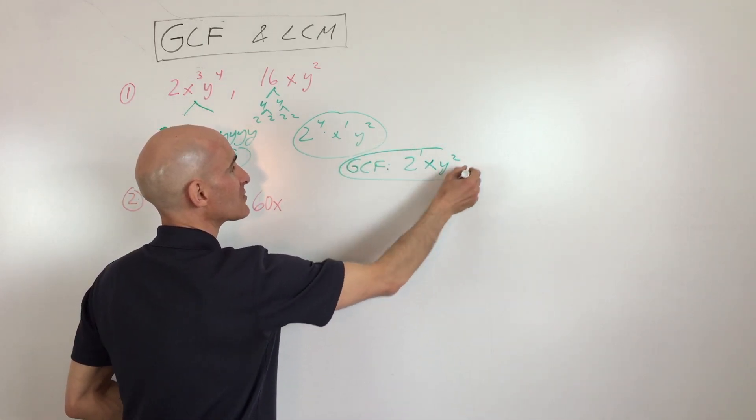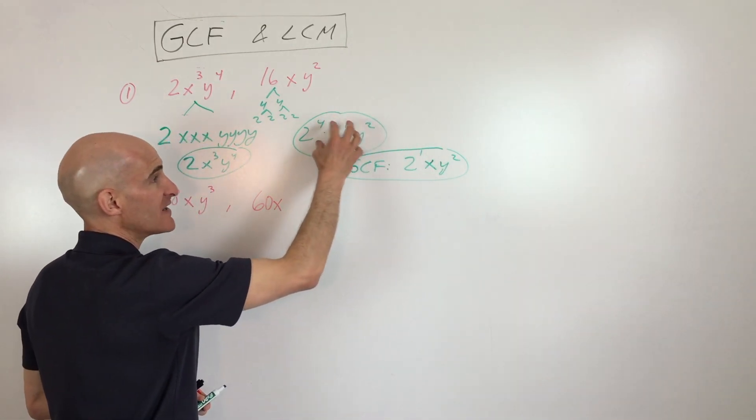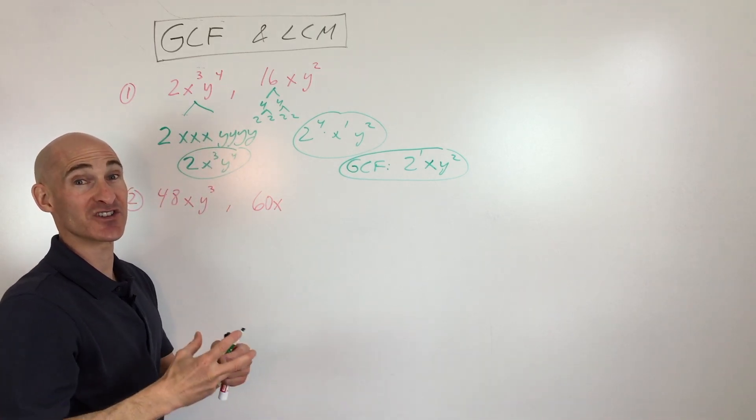So what the greatest common factor tells us is, this is the largest quantity that we'll divide into this quantity and into this quantity. It's the largest, it's the greatest.